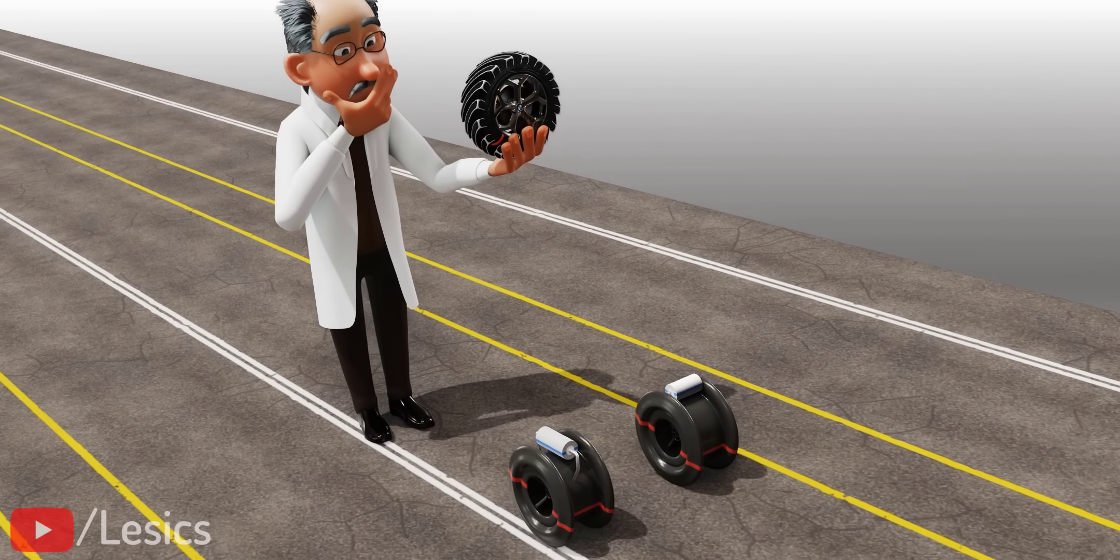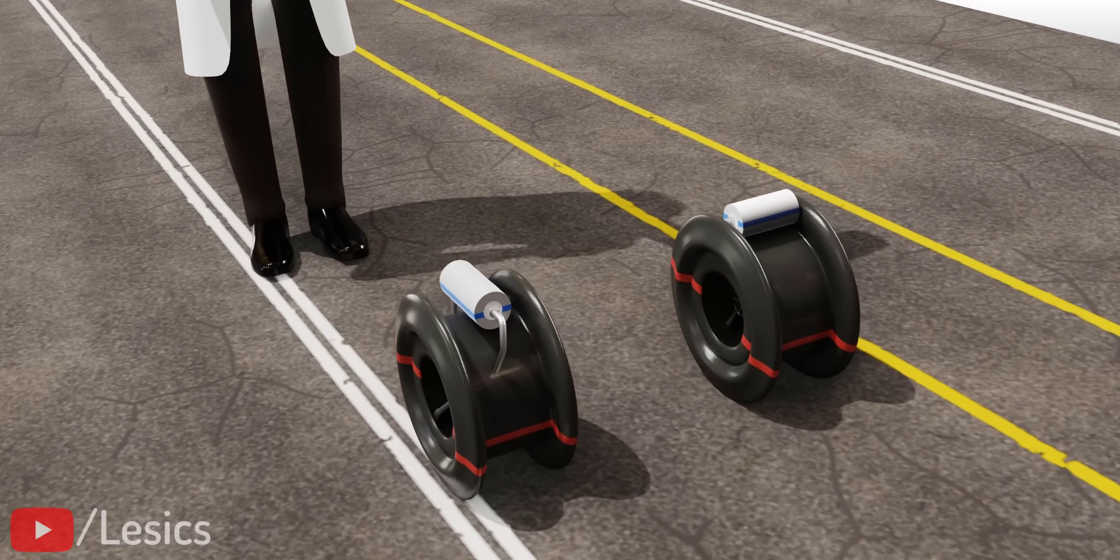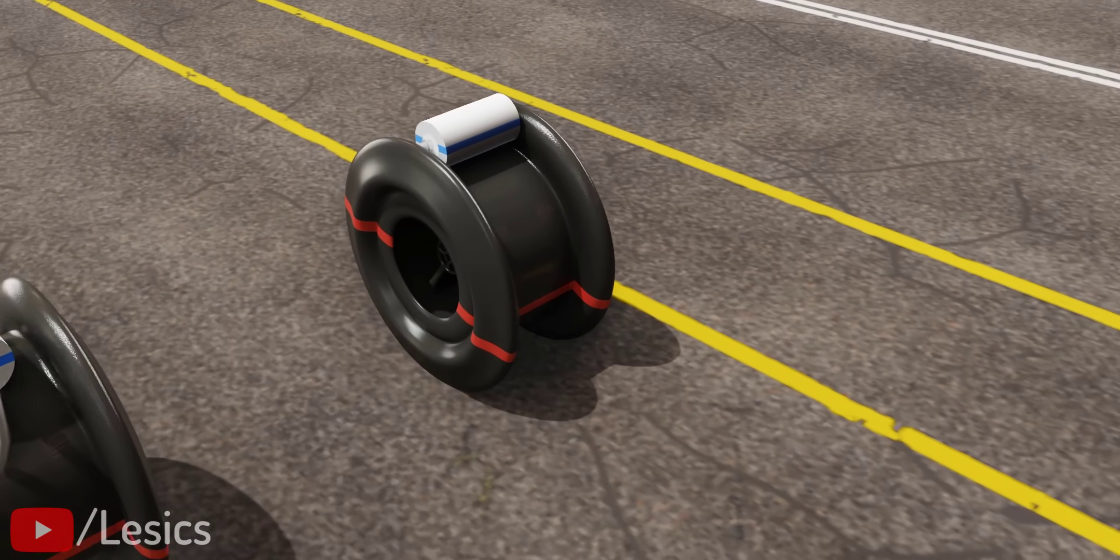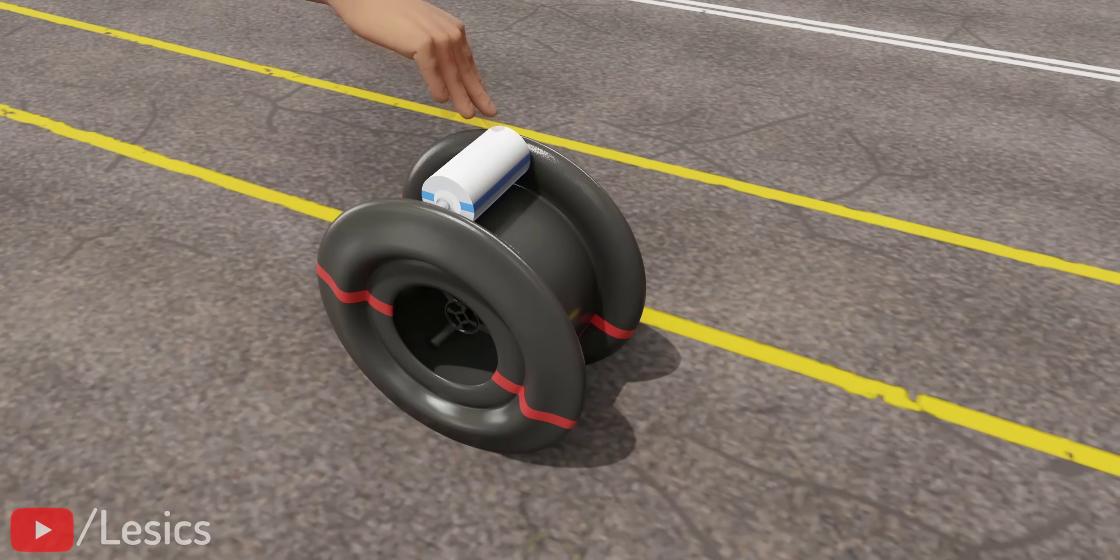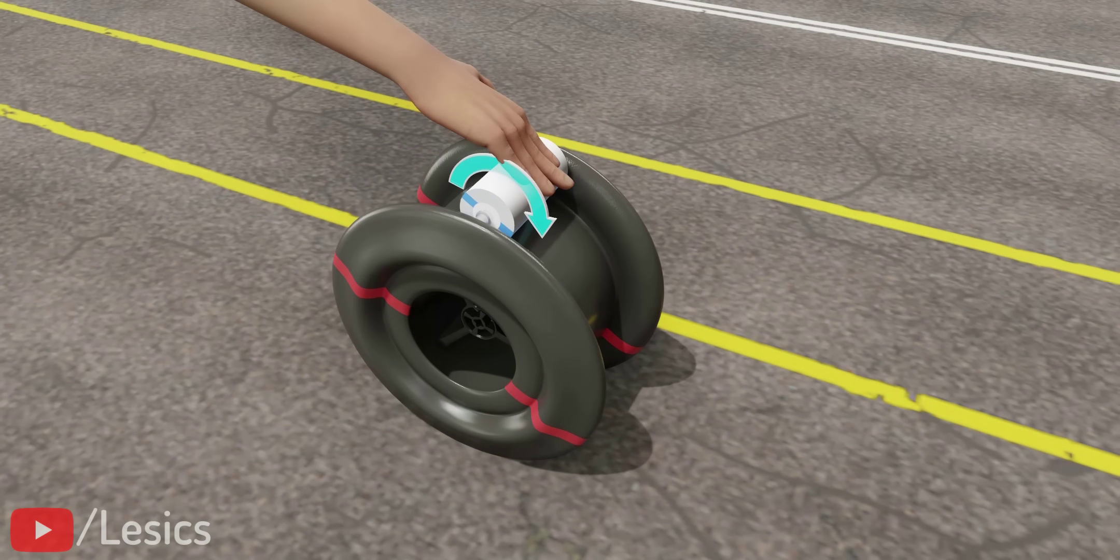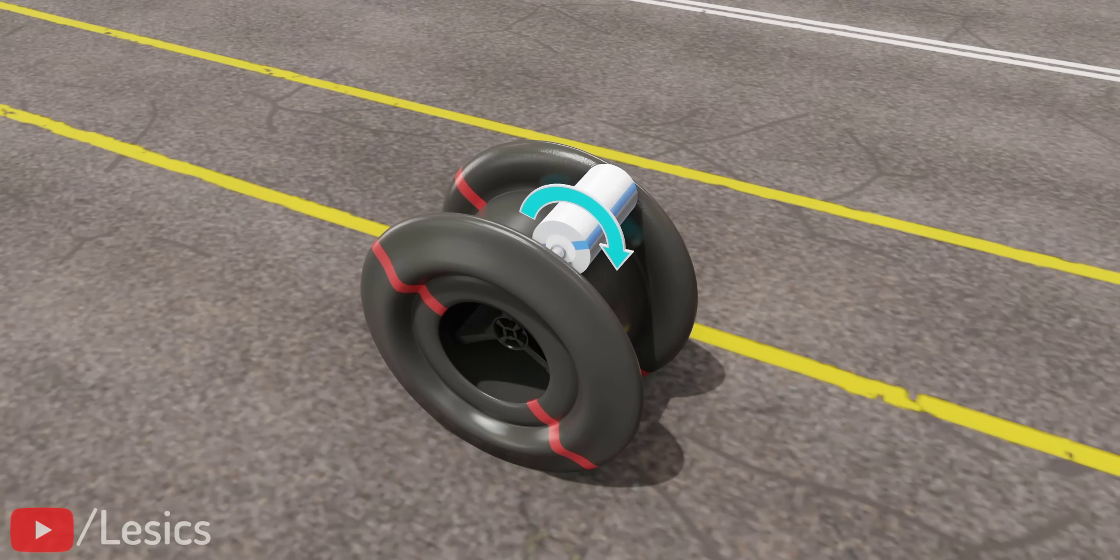The inspiration for the invention of mechanum wheels may have come from these simple examples. In the first case, when you try to transmit a force, you will be able to transfer only a small amount of force, because the roller is free to spin.